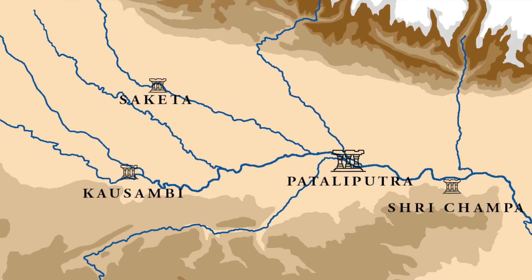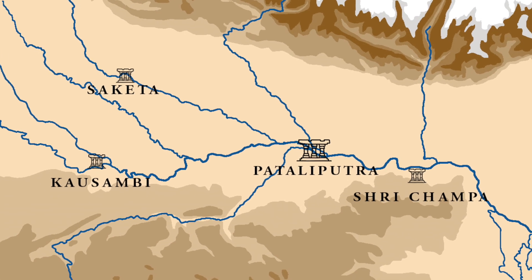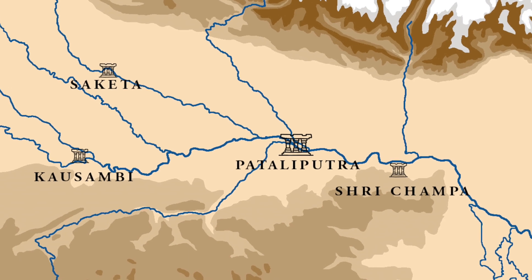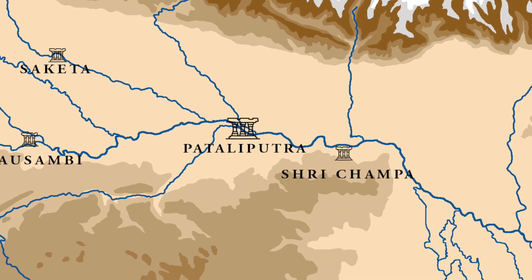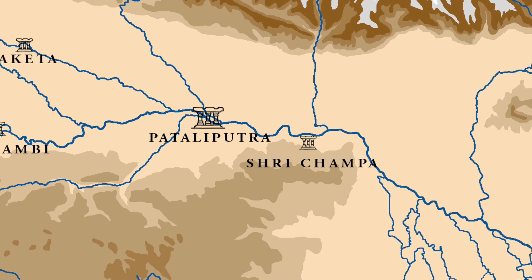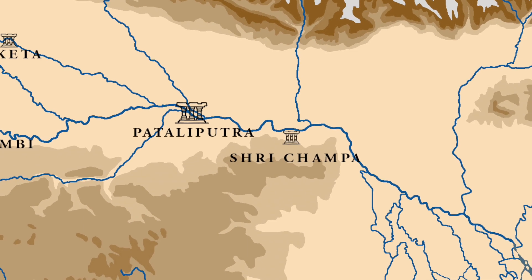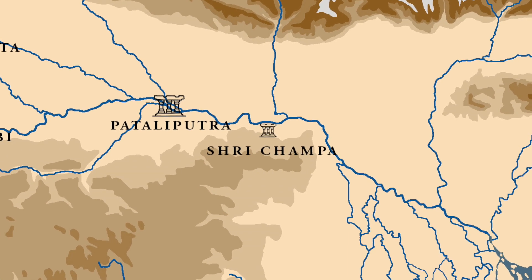Saket, Kaushambi, Patliputra and as far as Sri Champa — whichever city he and his generals reached, all submitted to his will. And he submitted all India to his will. So says the Rabatak inscription which was found in 1993 in Afghanistan.